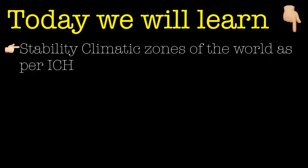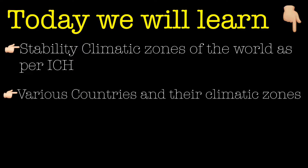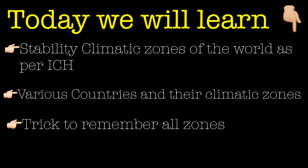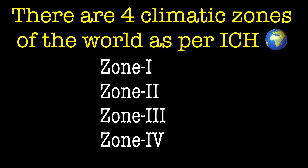As per ICH, the world has been divided into different stability climatic zones. We will learn about these zones, the various countries associated with them, and a shortcut trick to remember them all. As per ICH, the world is divided into four main stability climatic zones: Zone 1, Zone 2, Zone 3, and Zone 4, where Zone 4 is further divided into two sub-zones: 4a and 4b.